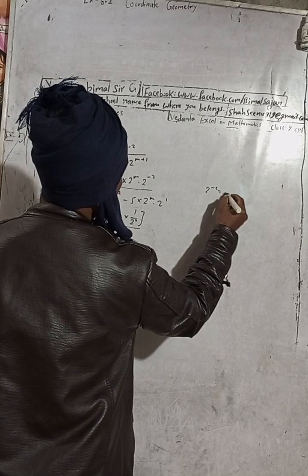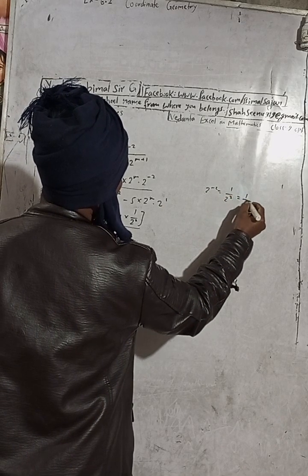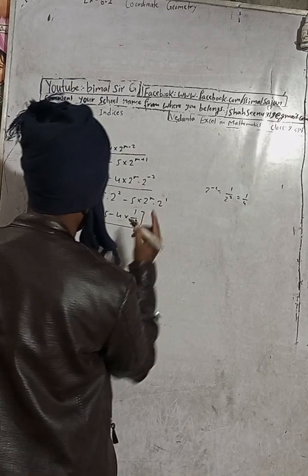Because 2 to the power minus 2 means what? 1 by 2 to the power plus 2 square. Which is equal to 1 by 4. So this is 1 by 4 you can write otherwise write this same.